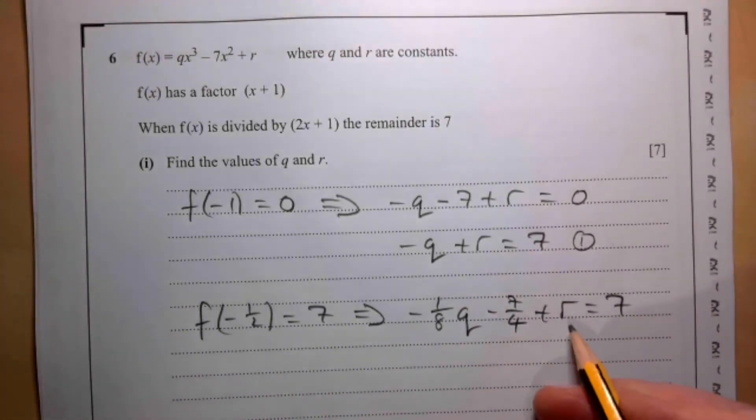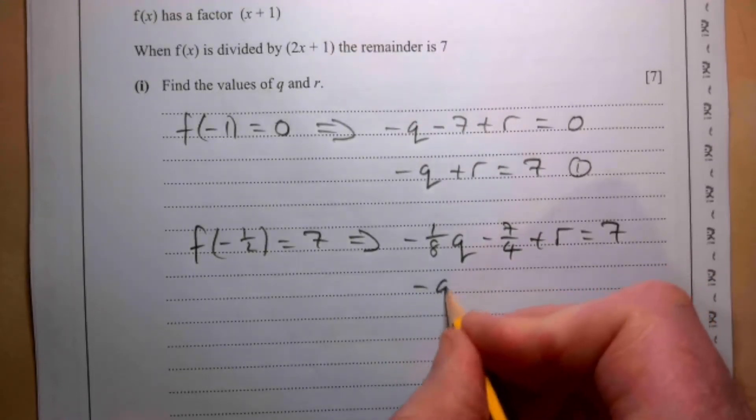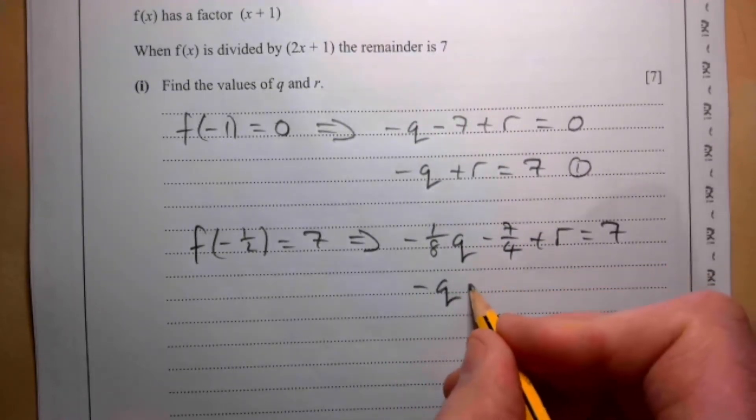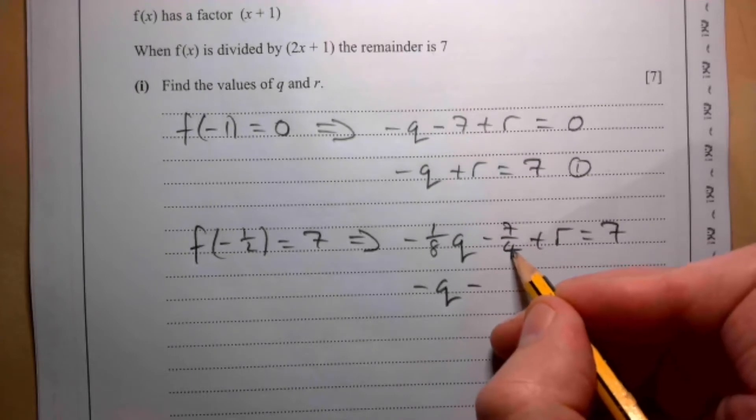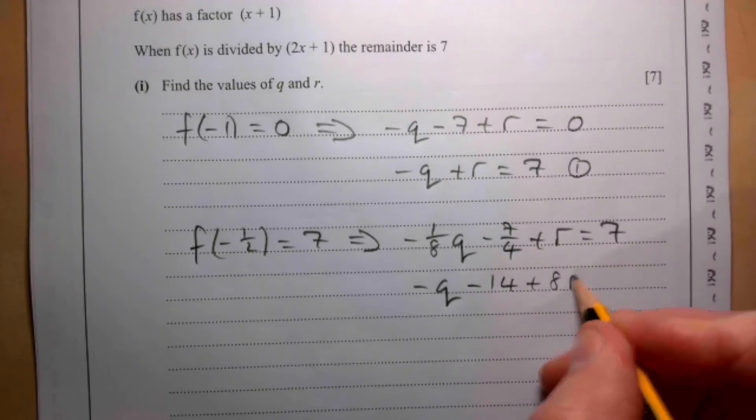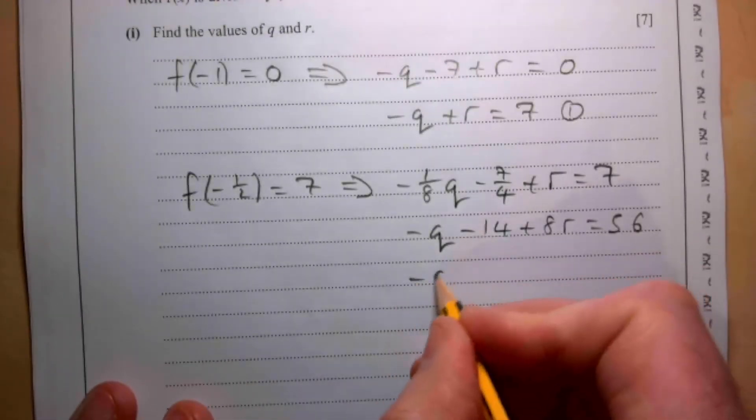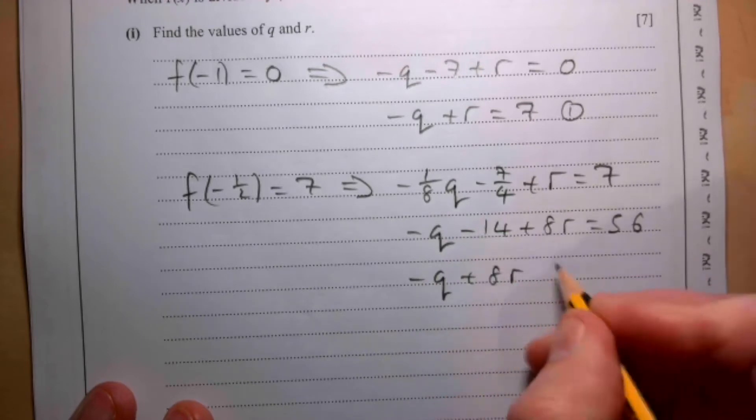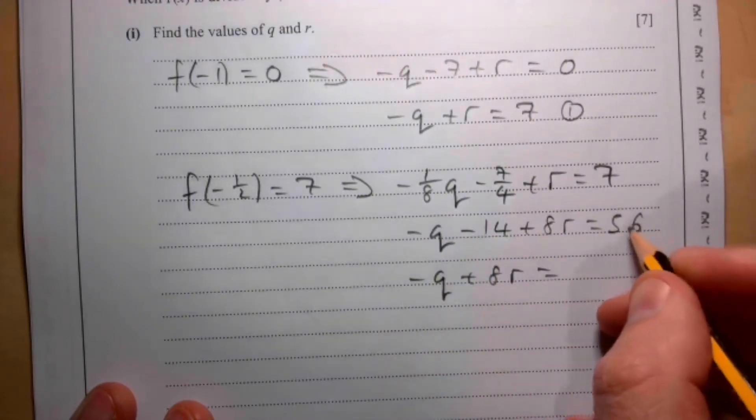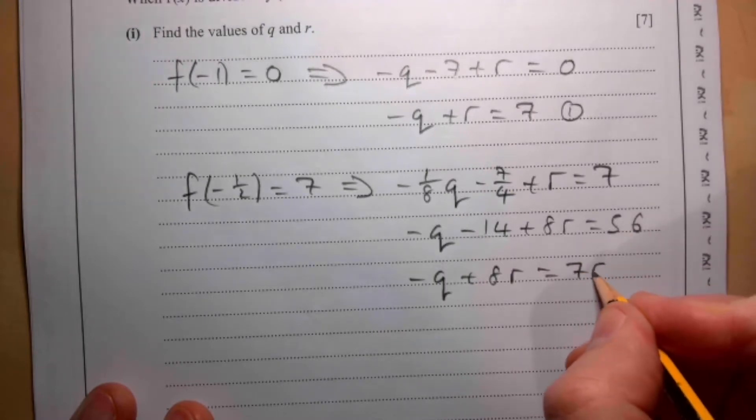I don't like the fractions here, so I'm going to multiply through everything by 8. That gives me -q - 14 + 8r equals 56, which gives me -q + 8r equals 70.